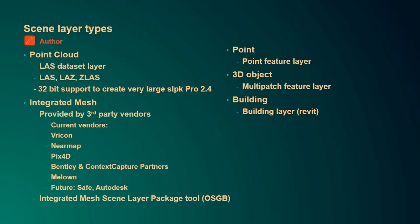Integrated mesh mostly comes from third-party vendors like PIX4D or ContextCapture, but we also have a Create Integrated Mesh tool where you can use OSGB as an input type. We have two feature-based scene layer types: Point and 3D Objects, which you can create from a Point feature layer or a multi-patch feature layer. The last scene layer type added in 2.3 is the Building Scene Layer, created from a building layer — usually with Revit as the data source — and you can create an SLPK, upload it, or share it directly in a web scene.